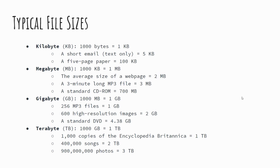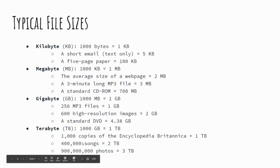Here are some typical file sizes. A five-page essay would likely take up about 100 kilobytes. A three-minute song is roughly three megabytes, so when downloading music you'll typically find it's around three megabytes per song. A standard DVD-quality film is about 4.38 gigabytes, which fits within the 4.7 GB capacity of a DVD disc. To put terabytes in perspective, 200,000 songs fit in one terabyte — which is why most computers don't need much more than two to four terabytes of storage.